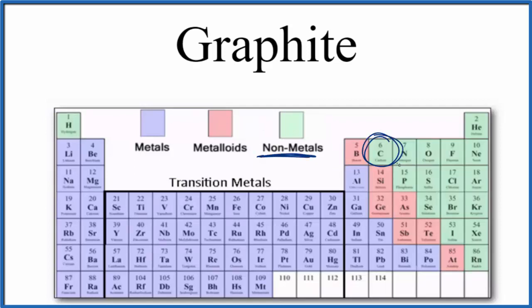So graphite consists of only carbon, these carbon atoms bonded together. Since we have only carbon, carbon's a non-metal, we're going to have a covalent compound, also called a molecular compound. So the bond will be covalent.